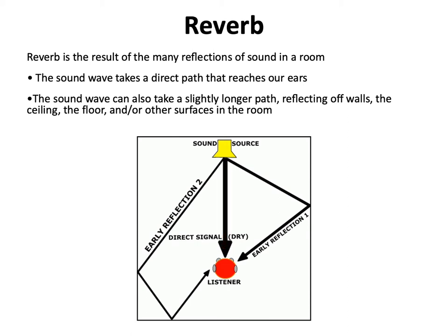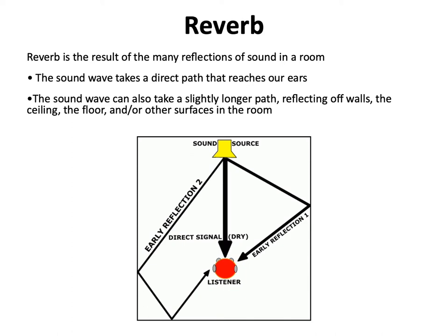The other paths are reflected. If we consider the right side of the diagram, the sound reflects off of the wall and then to the listening position. On the left side of the diagram, the sound reflects off the side wall, the back wall, and then reaches the listening position. These reflections take a longer time to reach the listening position than the direct sound, but they all intermix with the direct sound, reinforcing it.